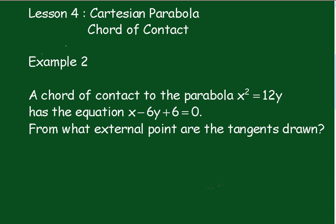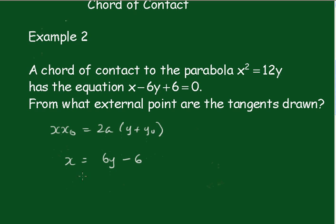So we're sort of doing this thing in reverse. Let's write down the chord of contact formula, so we'll write that down as xx₀ equals 2a into y plus y₀. I'll rearrange that in this form, so now I'll write x as the subject, so we'll have x is equal to 6y minus 6, and I'll take out the 6 as a common factor, 6 into y minus 1.